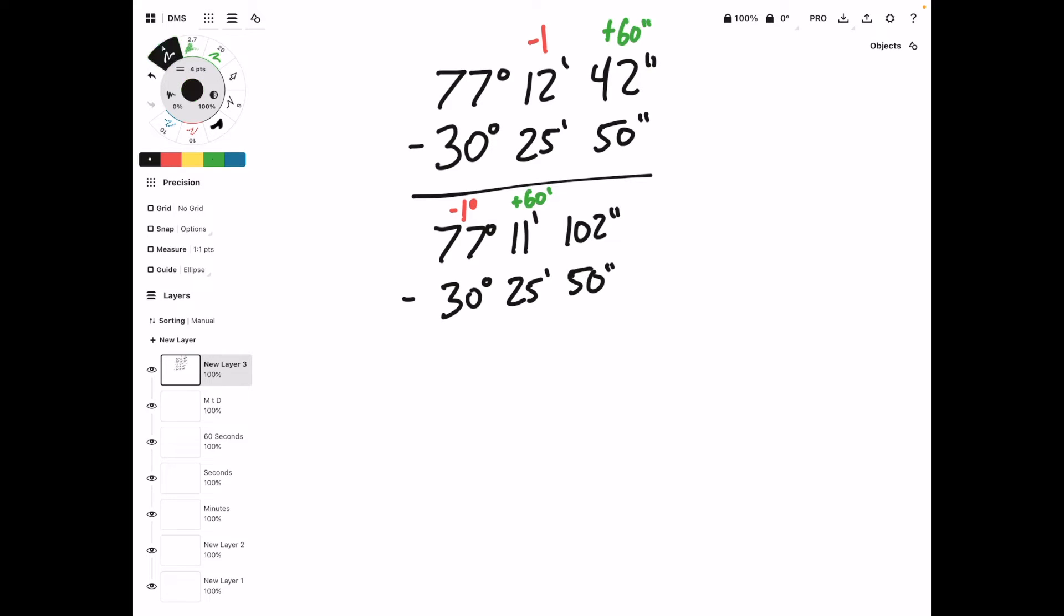And we can rewrite our expression one more time. It now becomes 76 degrees, 71 minutes, 102 seconds, minus 30 degrees, 25 minutes, 50 seconds.